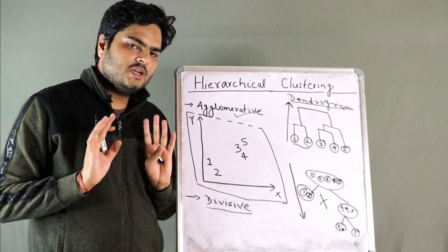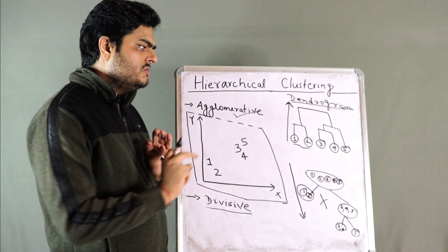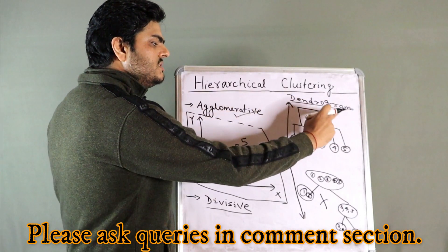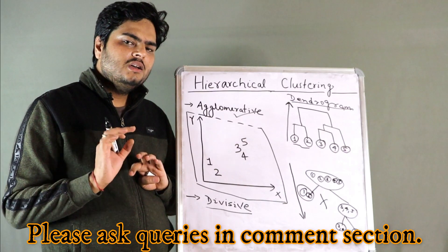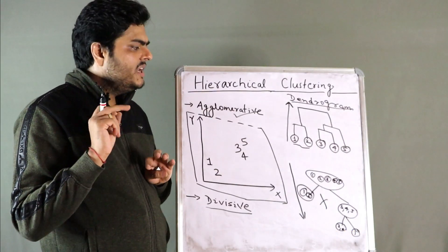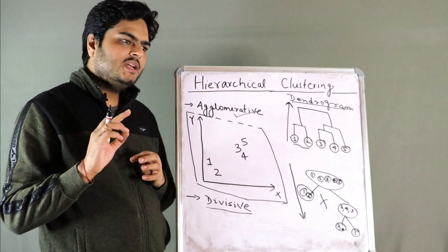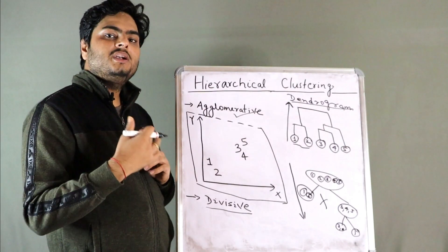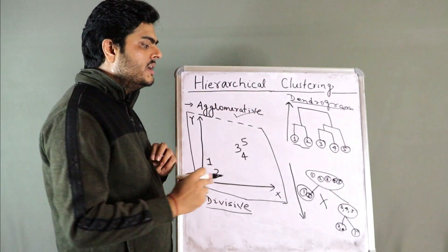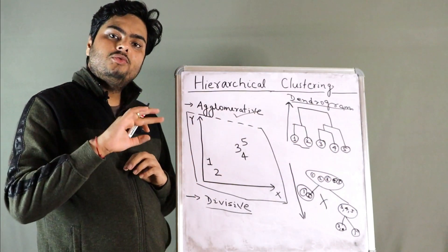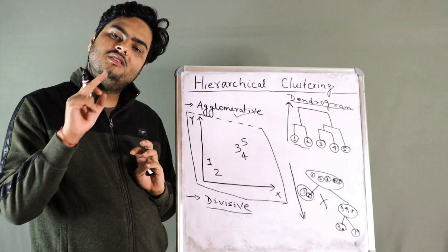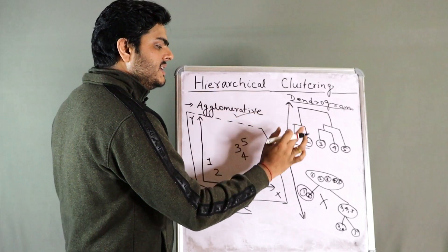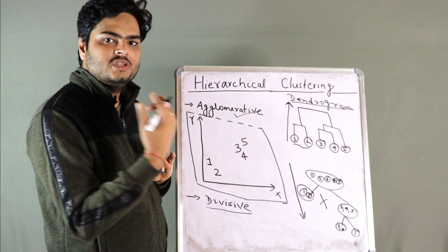There are some disadvantages with this clustering. The first disadvantage is time and space complexity. There must be some mathematics going on internally. Every time it is calculating — can I merge one and two together? Can I merge three and four? Why should three and four be merged with five and not with one and two? There is mathematical calculation going on constantly, making it space and time complex — it takes more time and more resources.